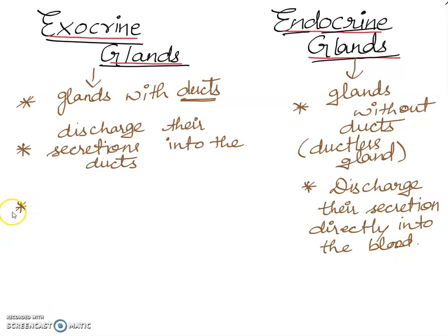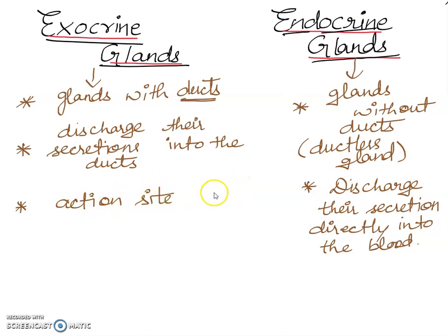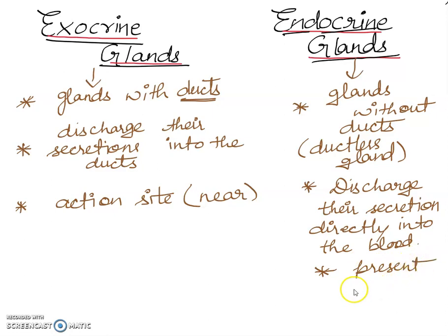The third point: exocrine glands are present near the site of action. Endocrine glands, on the other hand, are present at a far away site from the site of action.